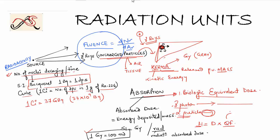The quality factor takes into account what particle is present and how much damage it causes. For a gamma photon, the quality factor is 1, so the biologic equivalent dose equals the absorbed dose. For an alpha particle, the quality factor is 20 — meaning the biologic equivalent dose from an alpha particle is 20 times that of a gamma photon, because the alpha particle deposits its energy over a very short area causing much greater damage.